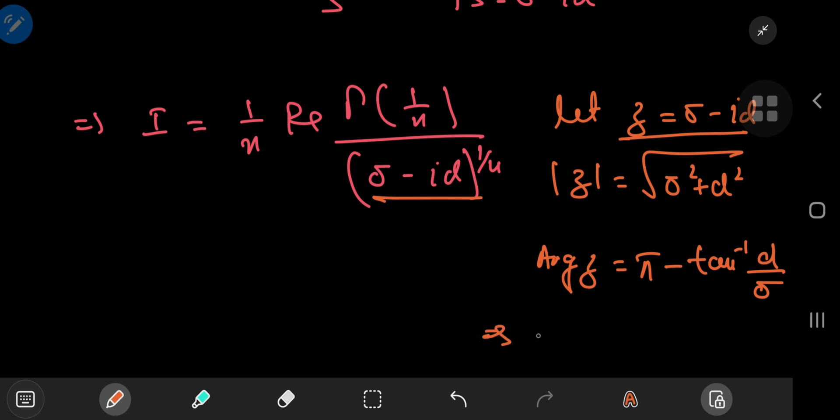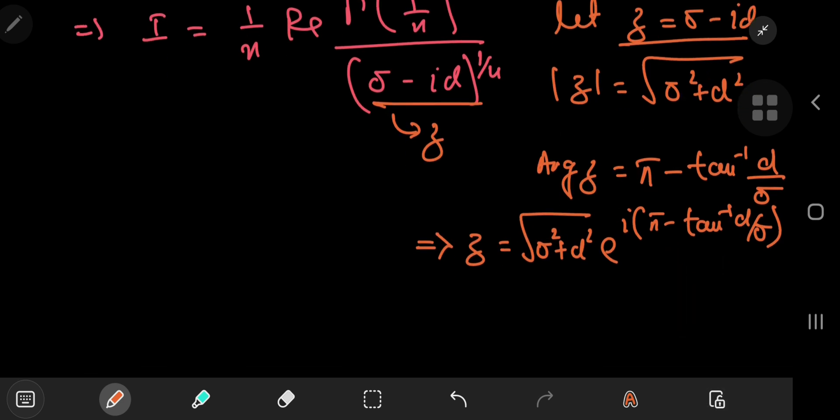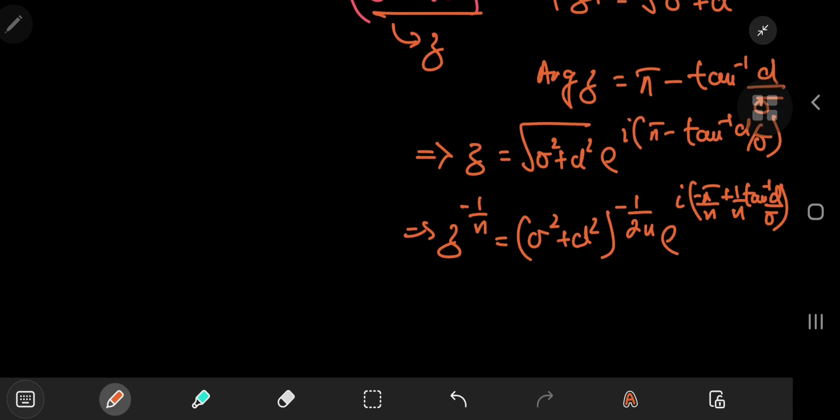So that means z equals the square root of sigma squared plus alpha squared times e to the i times pi minus the inverse tangent of alpha by sigma. And we have this complex number z being raised to 1 by n in the denominator. So let's just take the exponent to be negative 1 by n. So this implies that our complex number equals sigma squared plus alpha squared to the negative 1 by 2 n times e to the i times negative pi by n plus 1 by n times, again, the inverse tangent term. And I've run out of space to write it. But anyway, you get the idea.